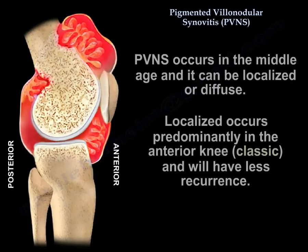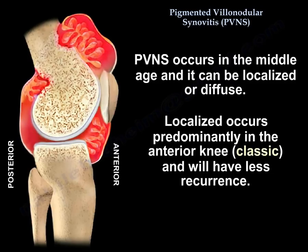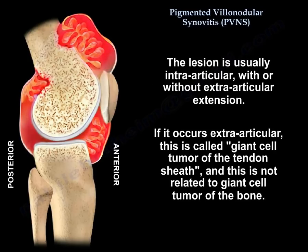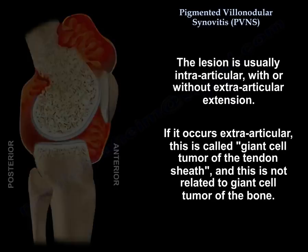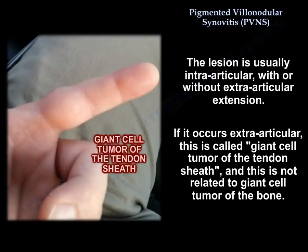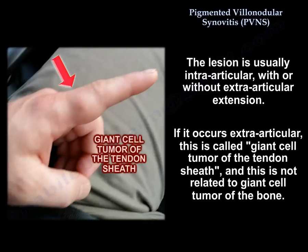It occurs in middle age. It can be localized or diffuse. The localized form occurs predominantly in the anterior knee — that is classic — and will have less recurrence. The lesion is usually intra-articular, with or without extra-articular extension. If it occurs extra-articular, it is called giant cell tumor of the tendon sheath, and this is not related to giant cell tumor of the bone.